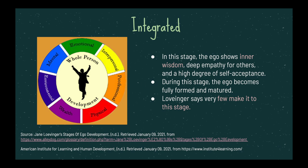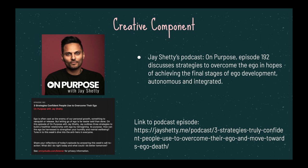For my creative component, I decided to attach a podcast episode of On Purpose with Jay Shetty that I thought was really relevant to my presentation. It's titled 'Three Strategies Confident People Use to Overcome Their Ego.' This is relevant because it revolves around ego and how it becomes prevalent in certain moments or phases of our lives. The episode talks about strategies to overcome the ego in hopes of achieving the integrated or autonomous stage. I linked the podcast episode on the screen, but you can also find it on Apple Podcasts, Spotify, or Jay Shetty's website.